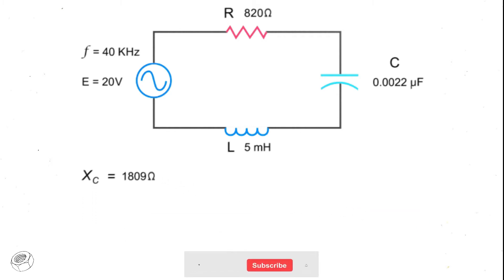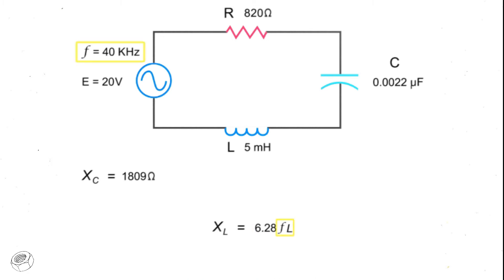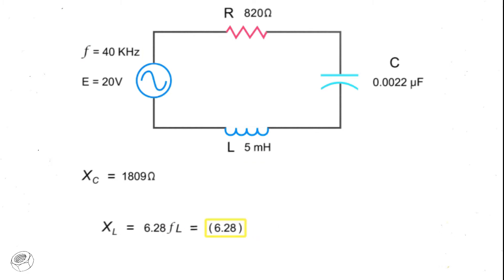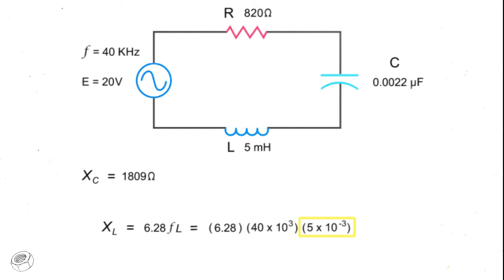To calculate the inductive reactance, multiply 6.28 by the frequency, by the inductance of the inductor. Thus, 6.28 times 40 kilohertz times 5 millihenries equals 1,257 ohms.